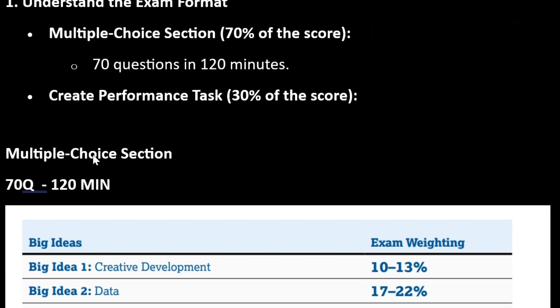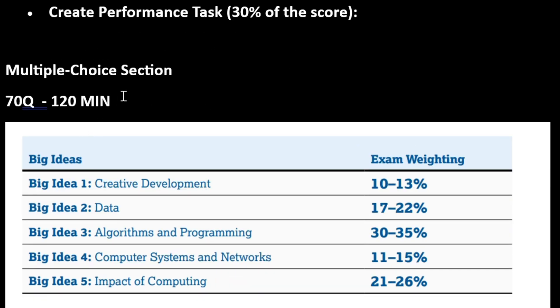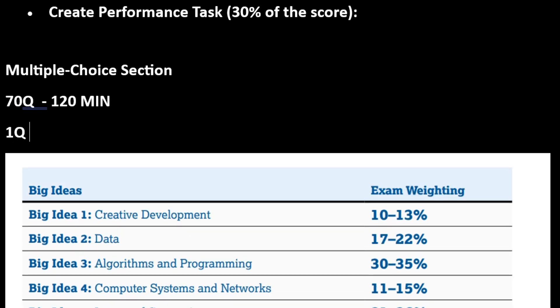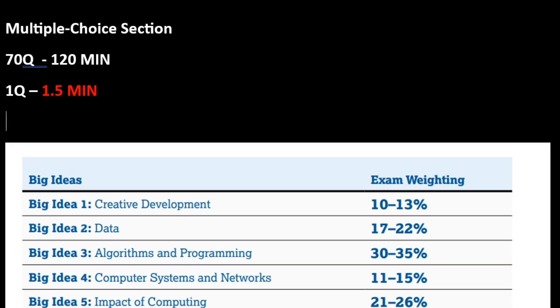So first we will discuss about the multiple choice section. You have 70 questions in 120 minutes, so per question you should not spend more than 1.5 minutes. The math comes around 1.7 minutes, so to be on safer side, 1.5 minutes. We need to focus less on those questions which will take more time. The focus is to attempt complete paper, so we need to solve maximum number of questions.